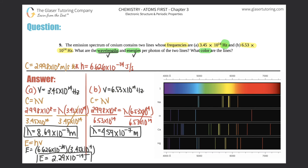Now the same thing for B: E equals Planck's constant times frequency, so E equals 6.626 times 10 to the negative 34th times 6.53 times 10 to the 14th, and we get 4.33 times 10 to the negative 19th joules per photon. So that's the energy for B.